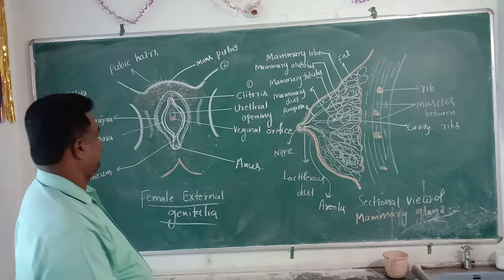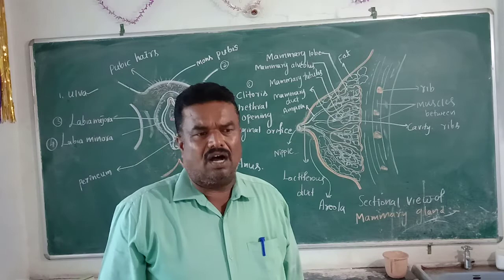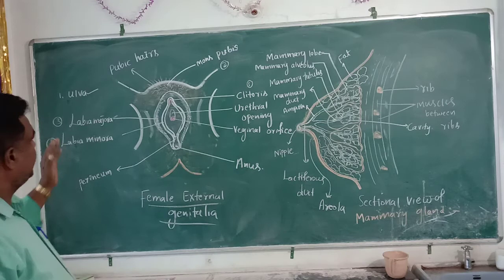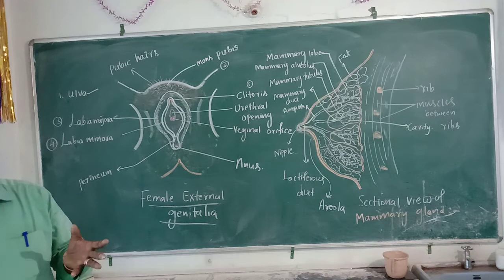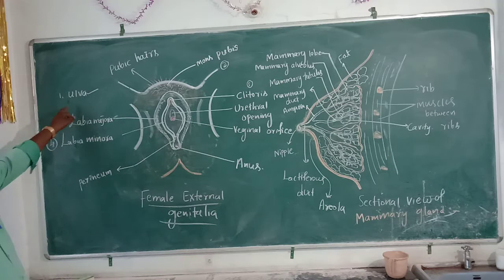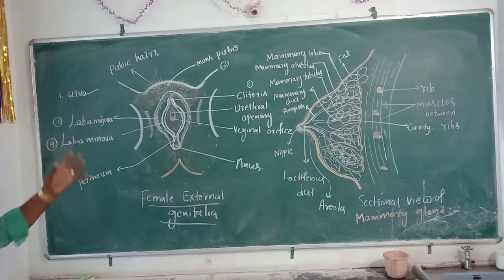Let us go to the first one — vulva. What is vulva? Vulva is the external part, the portion of the vagina which is present in between the legs, which is called as vulva.